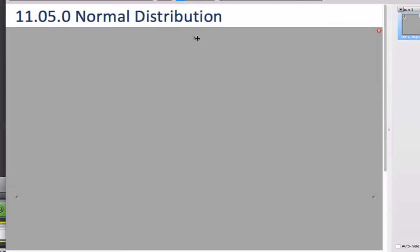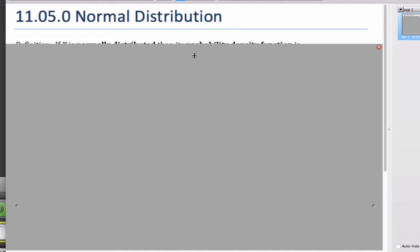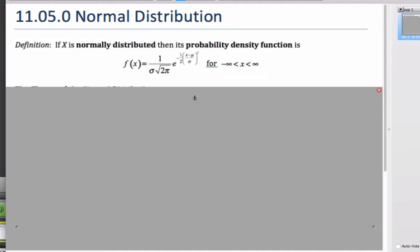Today we're going to look at the normal distribution, our first continuous distribution. Here is our function that defines the probability density function for a normally distributed function. It looks like this ugly mess, and it goes from negative infinity to infinity.